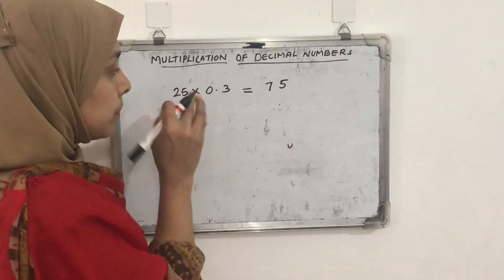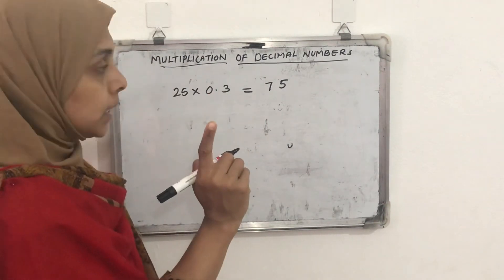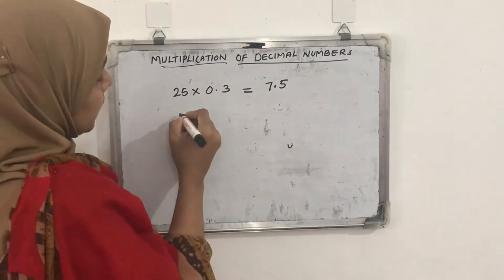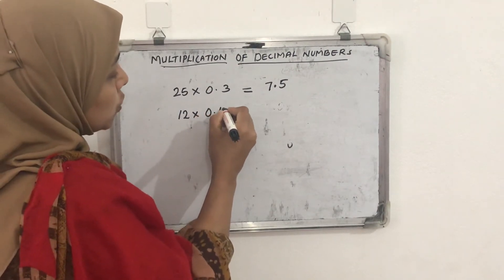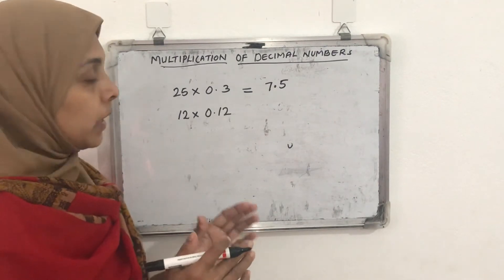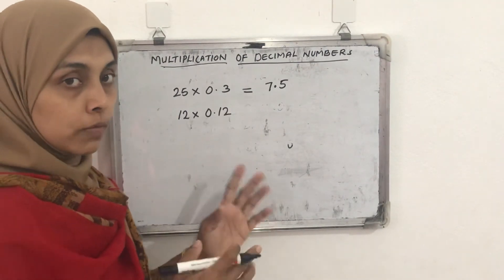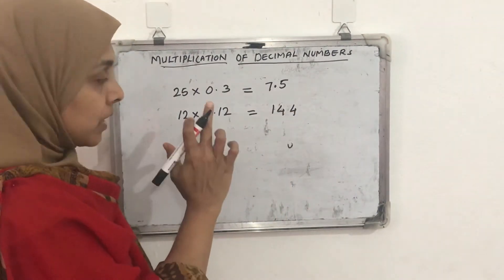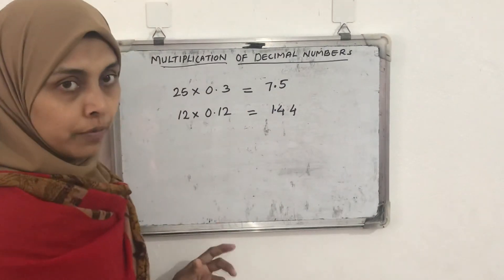How many decimal places are in 0.3? Only one decimal place — only one digit after the decimal point. So in the product we also need one decimal place. The answer is 7.5. Another question: 12 × 0.12. We multiply 12 × 12 = 144. Here there are a total of 2 decimal places, so in the product we need 2 decimal places. The answer is 1.44.